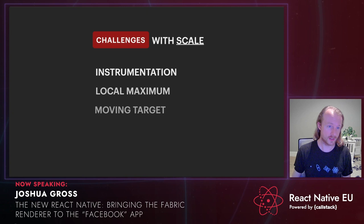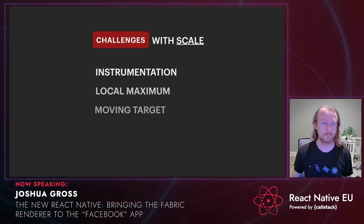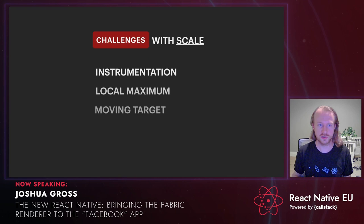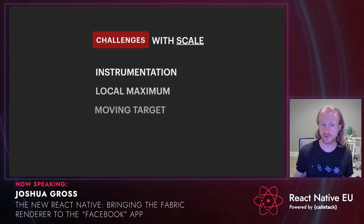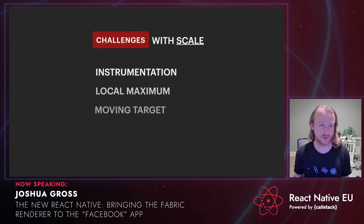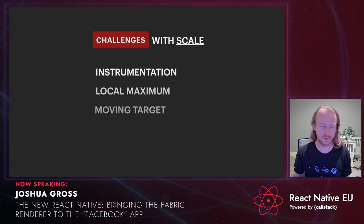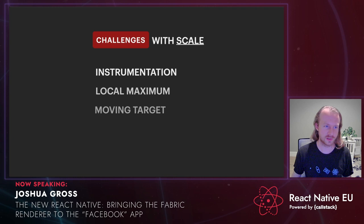Another challenge: Facebook is a moving target. Surfaces are being iterated on very quickly. There are 1,000-plus surfaces, and this number is growing daily. New features are being released, old features deprecated, new metrics introduced, old metrics removed — the baseline is constantly shifting. Especially in 2018 and 2019, we would try to experiment with screens that didn't use as many features so we could experiment with Fabric without having implemented all features. But those screens could be updated at any time to introduce usage of an unsupported feature.